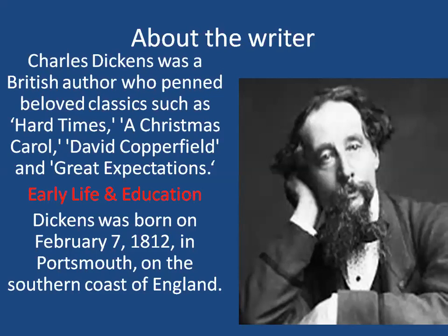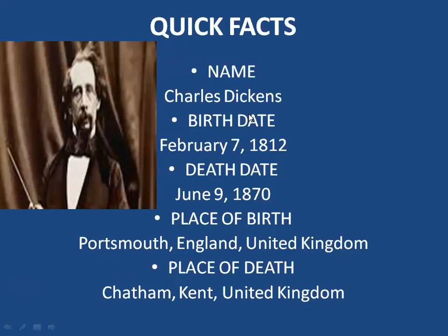Early life and education: Charles Dickens was born on February 7, 1812, in Portsmouth on the southern coast of England, and he took his early education there. Quick facts: his name is Charles Dickens, date of birth February 7, 1812, date of death 9th June 1870 — meaning he lived around 58 years. Place of birth: Portsmouth, England, United Kingdom. Place of death: Chatham, Kent, United Kingdom.